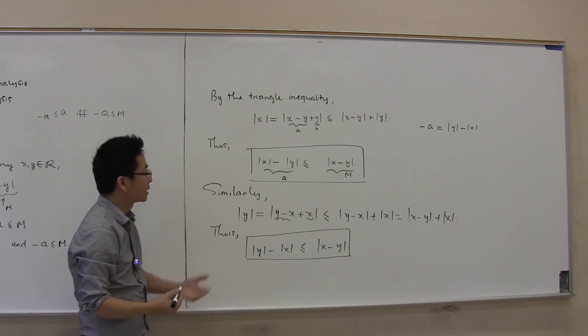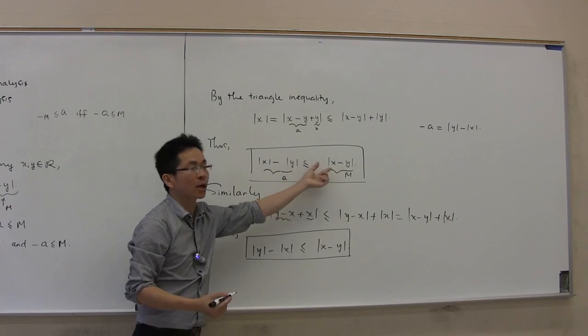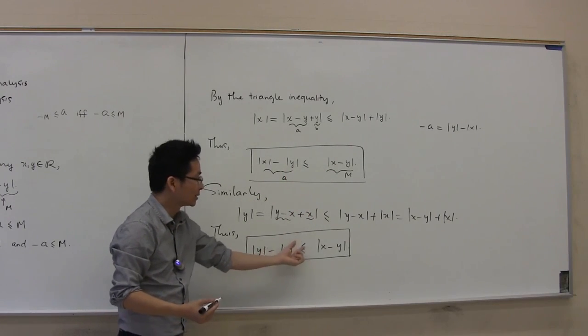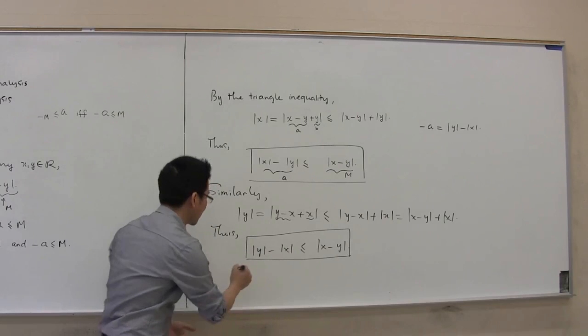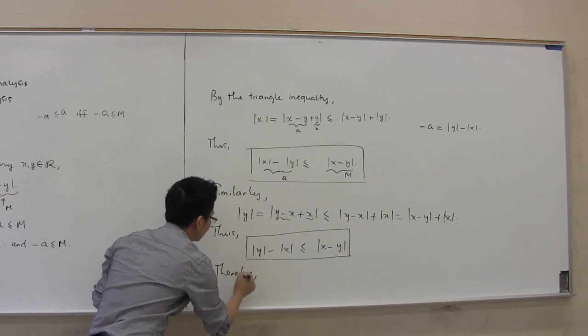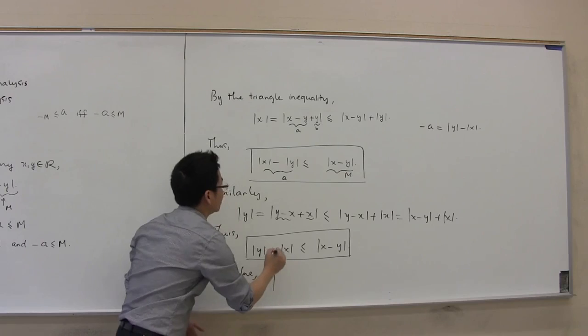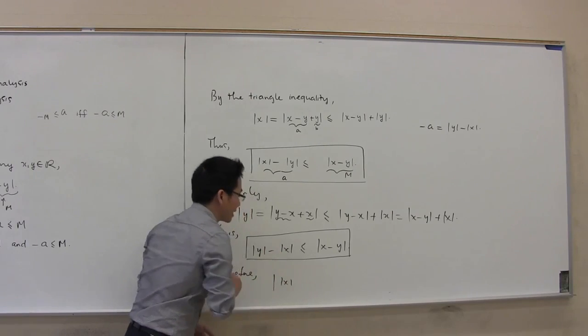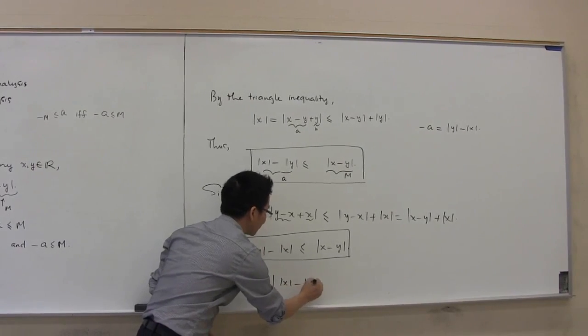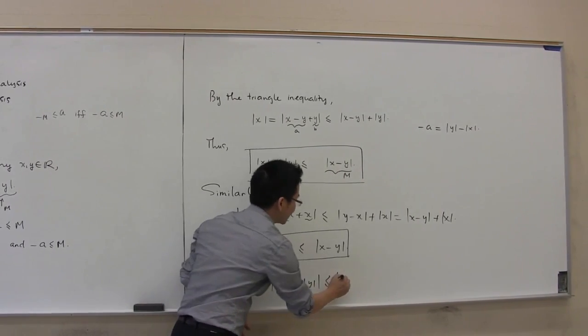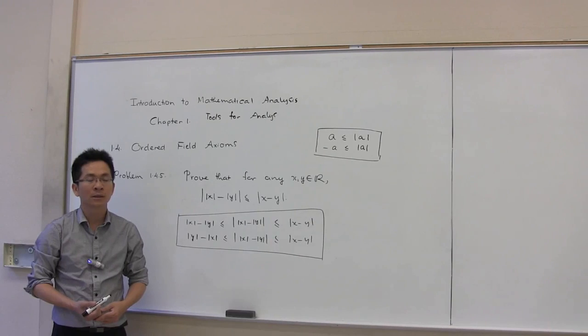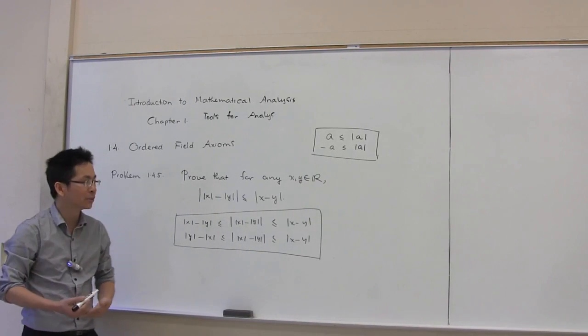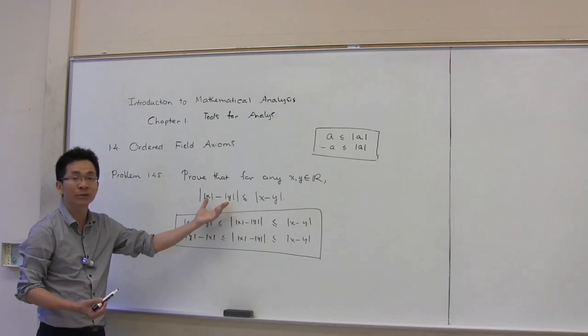Now we have shown that a ≤ m and -a ≤ m. Therefore, ||x| - |y|| ≤ |x - y|. We have completed the proof of the inequality using the triangle inequality.